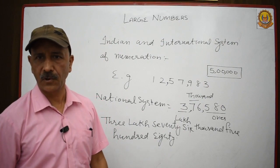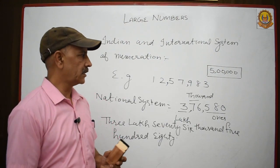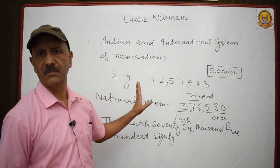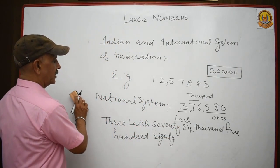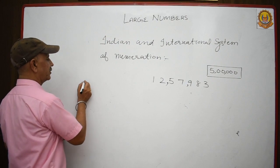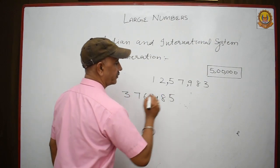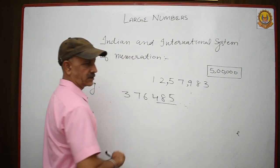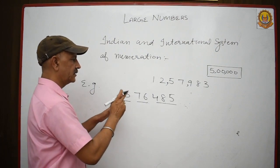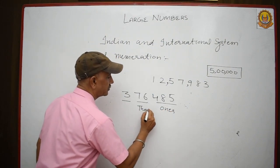In the international system, a little change is there. In the national system, we put the first comma after three digits, then after every two digits. Let me show you one more example of the national system: 3,76,485. This is a six-digit number — ones period, thousands period, and lakhs period.